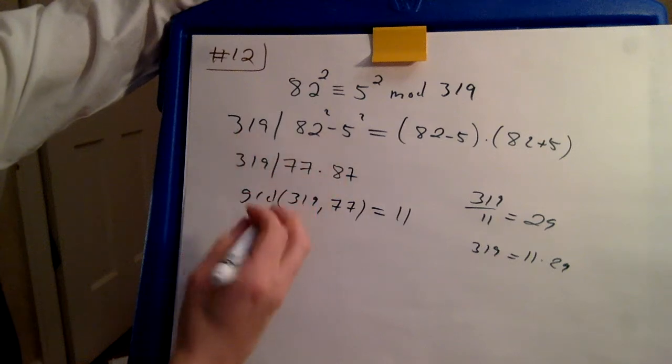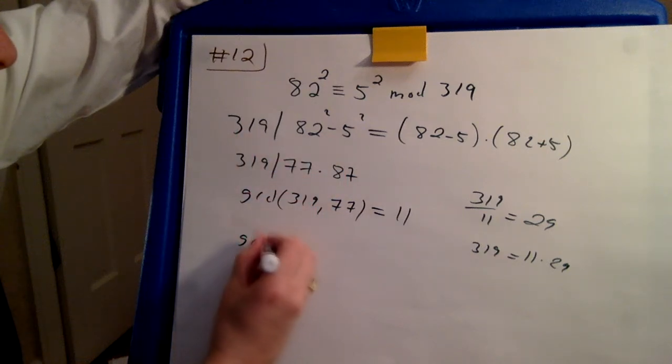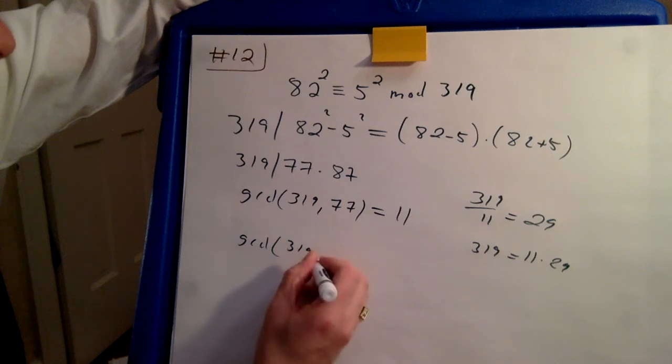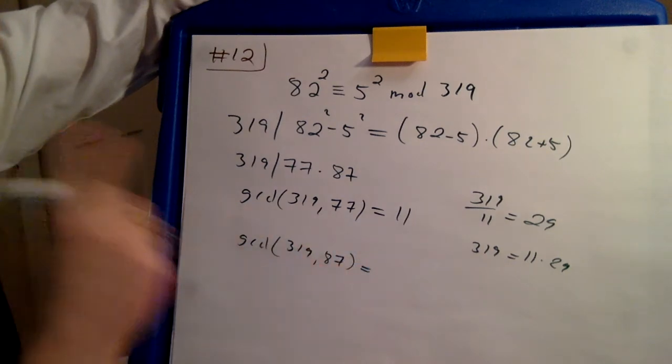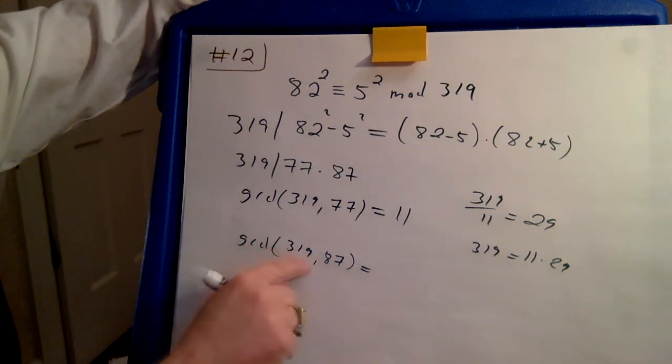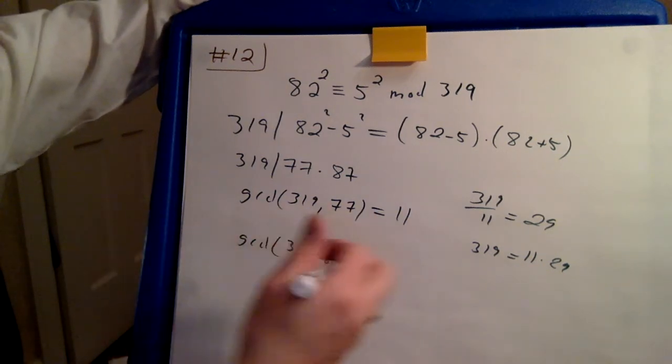Alternatively, you can use the other one. If you compute the greatest common divisor of 319 and 87, 87 has a factor of 3. Well, this is not divisible by 3. You can pull that 3 out.